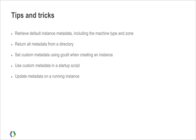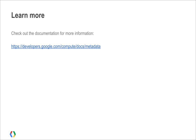In this video, I showed you just some of the cool things you can do with the metadata server, including how to retrieve default instance metadata including the machine type and zone, return all metadata from a directory, set custom metadata using gcutil, use custom metadata in a startup script, and update metadata on a running instance. There are many more neat features of the metadata server, including the wait-for-change metadata URL parameter and custom metadata at the project level. Check out the documentation for more information.